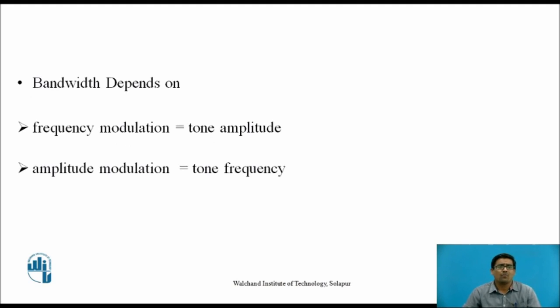From this example we conclude that in frequency modulation, bandwidth depends on the tone amplitude, whereas in amplitude modulation the bandwidth depends on the tone frequency. That is the key difference between the two.